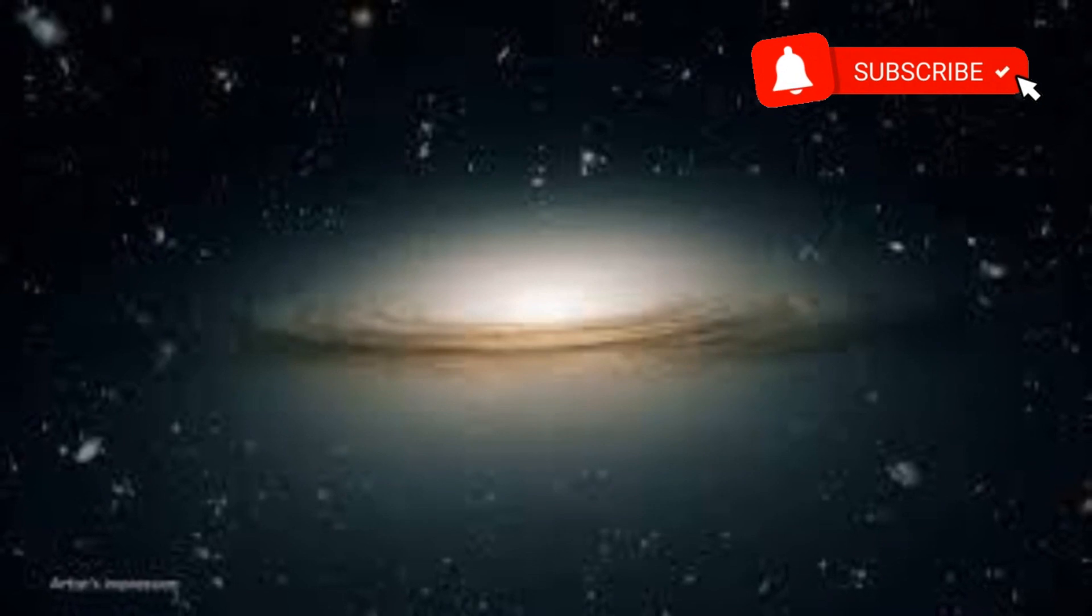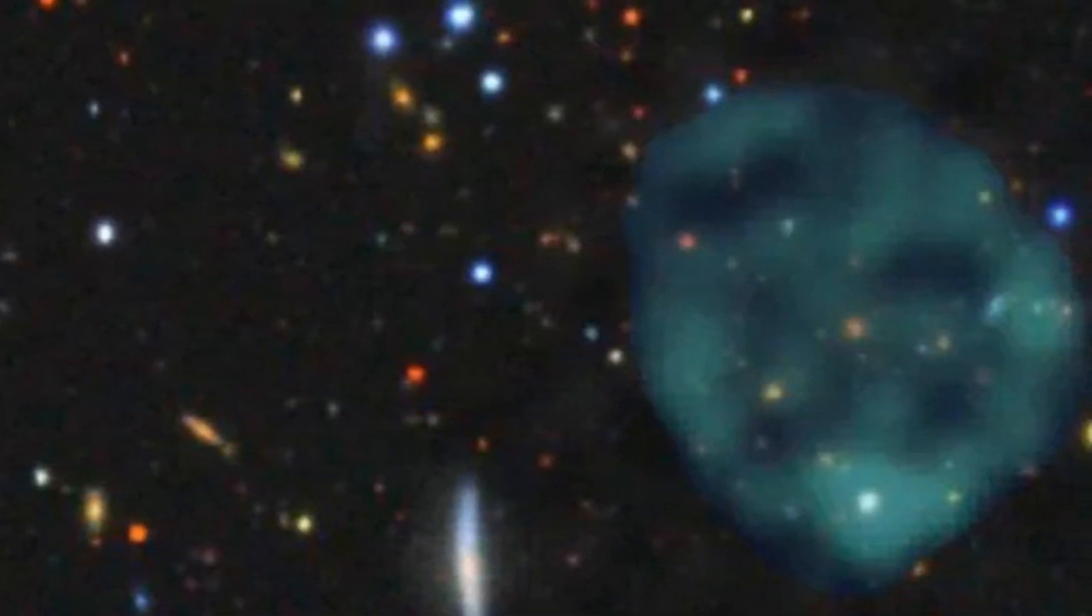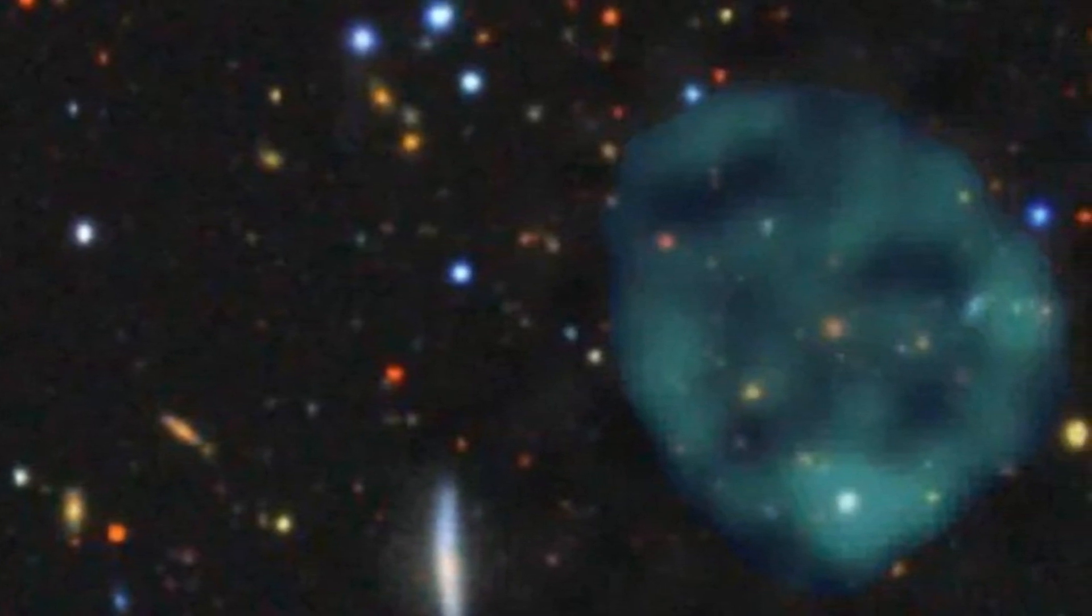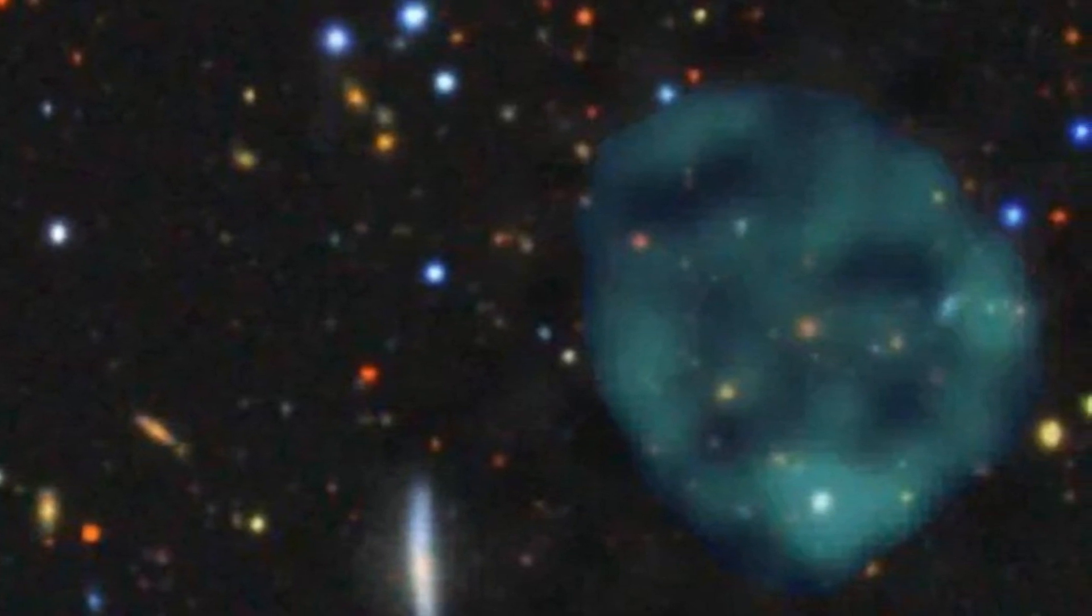These ghostly circles are believed to be shockwaves created by powerful winds emanating from galaxies undergoing starbursting, an intense period of rapid star formation resulting in massive stars that eventually explode in spectacular supernovae.